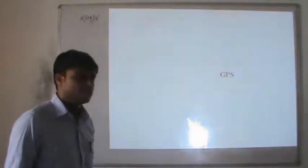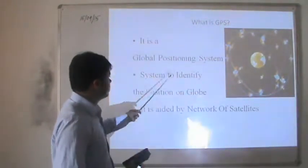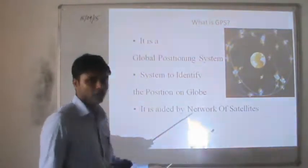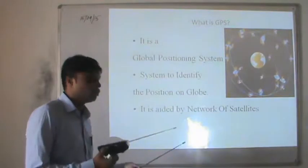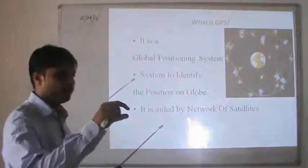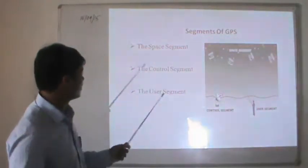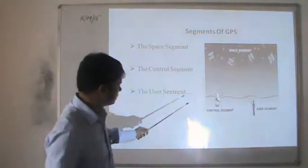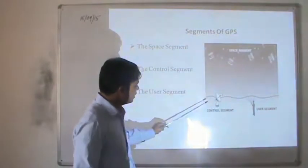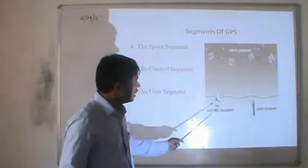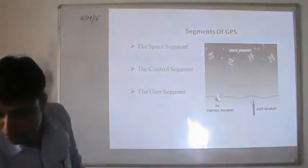The next topic is GPS — Global Positioning System. GPS is a system to identify the position of objects on the globe. It is a network of satellites that helps you determine exactly where you are on the globe. GPS has three segments: space segment (satellites), control segment (where signals are controlled), and user segment (what we receive on our GPS device).